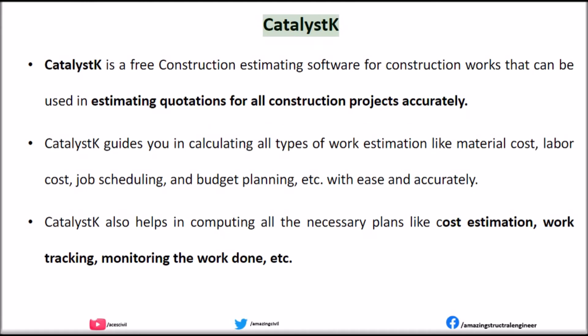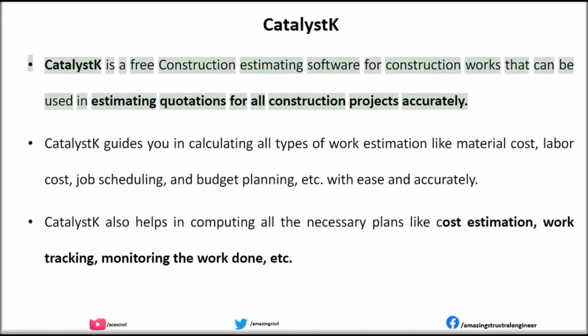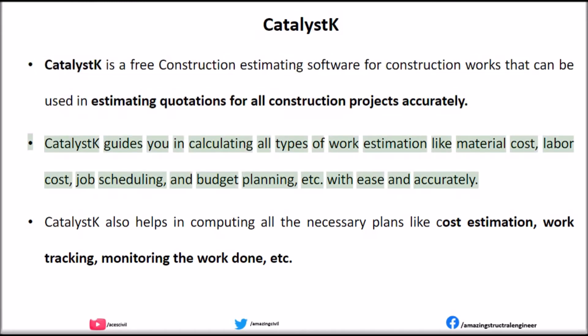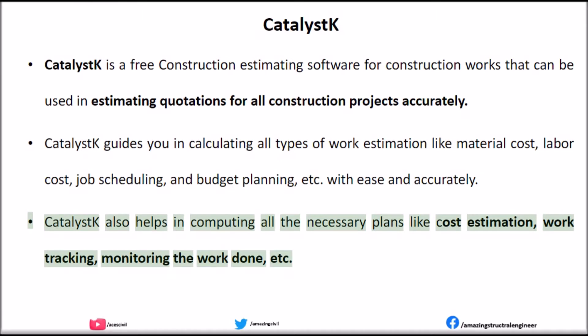Catalyst-K is a free construction estimating software for construction works that can be used in estimating quotations for all construction projects accurately. Catalyst-K guides you in calculating all types of work estimation like material cost, labor cost, job scheduling, and budget planning with ease and accuracy. Catalyst-K also helps in computing all the necessary plans like cost estimation, work tracking, monitoring the work done, etc.